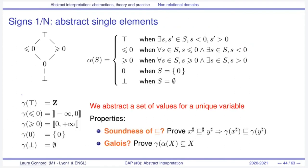Let's come to the sign domain. I depict here a lattice of signs where the top is the maximum value in this lattice, bottom is the minimum, and there are three non-empty values: zero, less-or-equal zero, and greater-or-equal zero. Let's begin with gamma, the concretization. The concretization of zero is the set reducible to {0}. The concretization of less-or-equal zero is all values between negative infinity and zero. You can pause the video and write the other values for gamma.